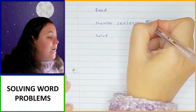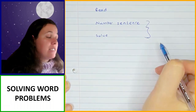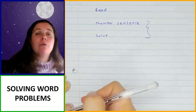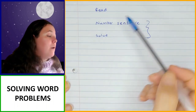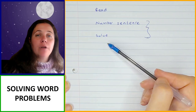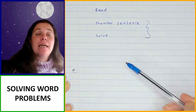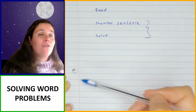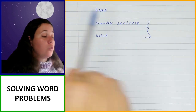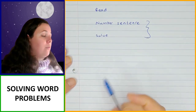Sometimes you might need to do these two steps more than once. If you've got a question that requires multiple steps, then you might need to write another number sentence and solve it, and then write another number sentence and solve it, until you actually get to the final answer.